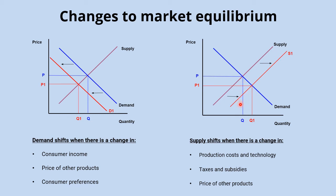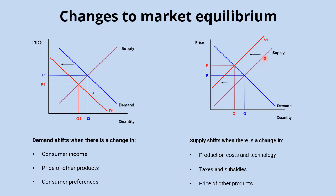If costs of production increase, that leads to a decrease in supply and the supply curve shifts to the left, giving a new equilibrium at a higher price and lower quantity — P1 and Q1. It's essential to analyze these changes by identifying what happens when demand or supply shifts, labeling diagrams with P, P1 and Q, Q1, and referring to movements along both axes in your analysis.